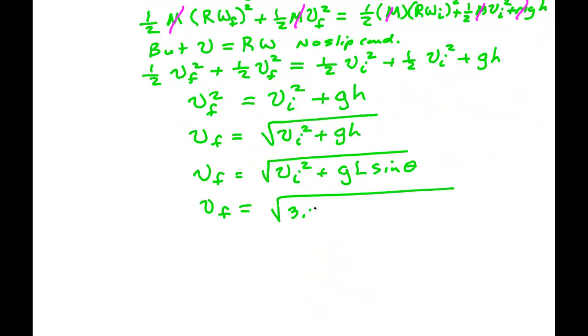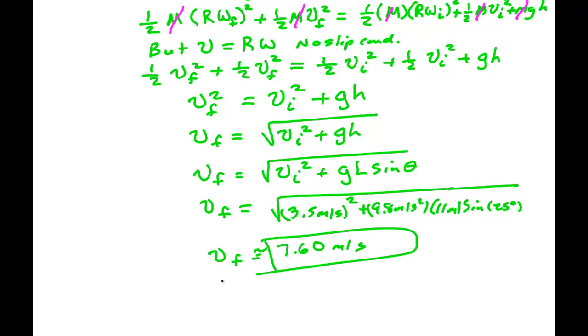So we have 3.5 meters per second. That's squared plus 9.8 meters per second squared times 11 meters times the sine of 25 degrees. And if I punch all that in, I think I get 7.60 meters per second. All right. We'll see you on another video.